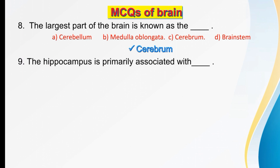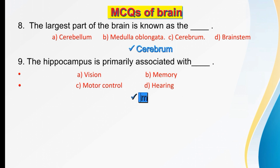The hippocampus is primarily associated with dash. Options are vision, memory, motor control, or hearing. The hippocampus is primarily associated with memory. The right option is B.